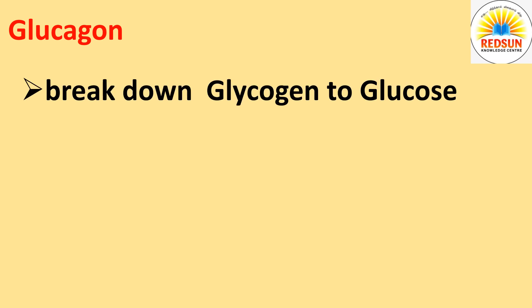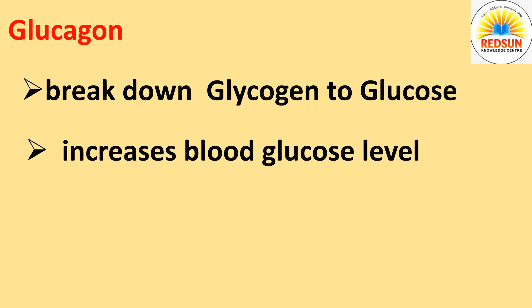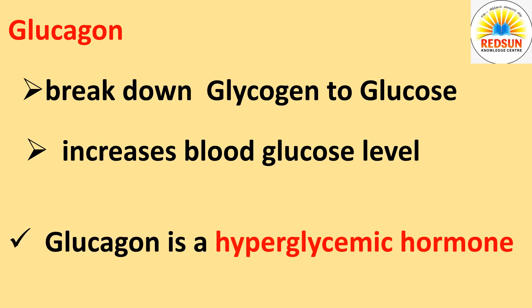Glucagon. Glucagon helps in the breakdown of glycogen to glucose in the liver. It increases blood glucose levels. Glucagon is a hyperglycemic hormone.